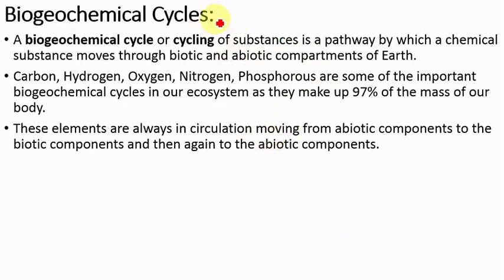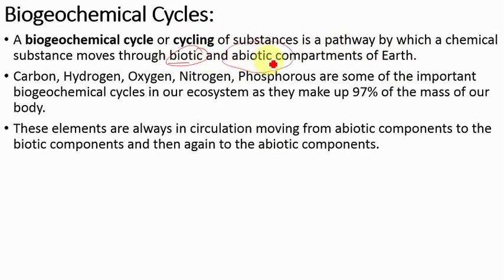So what is a biogeochemical cycle? A biogeochemical cycle, or cycling of substances, is a pathway by which a chemical substance moves through the biotic and abiotic compartments of earth. The earth has biotic compartments — the living organisms — and abiotic compartments — the non-living part. The various minerals or chemicals that move through these compartments and complete the process in a cyclic manner constitute the biogeochemical cycle.